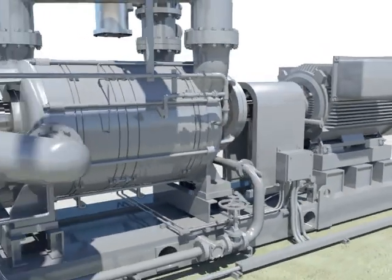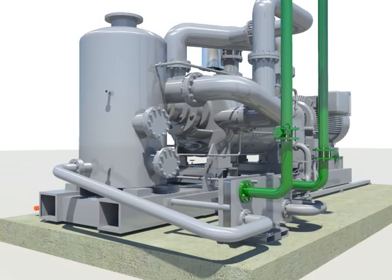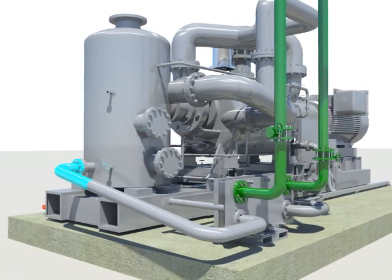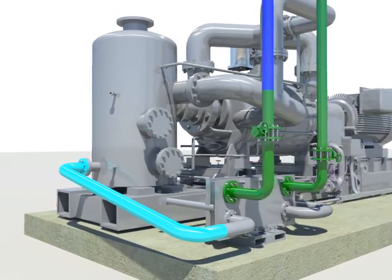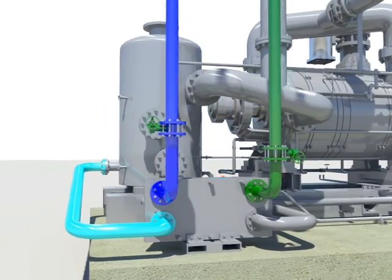The gland seal water, which is separated from the separator tank, flows into the seal water cooler and cools down by heat exchange of the circulation water, which comes from the circulation water pump.